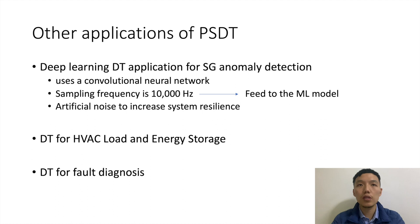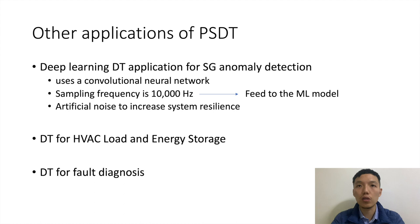Here are some other digital twin applications. The first is a DT based on deep learning to detect anomalies in a smart grid, using a convolutional neural network — similar to photo recognition, where buses act like pixels — scanning time series data to detect abnormalities. Artificial noise is added during training to increase system resilience. There's also DT research on HVAC load, energy storage, and fault diagnosis. I will cover more frameworks and applications in my literature review.